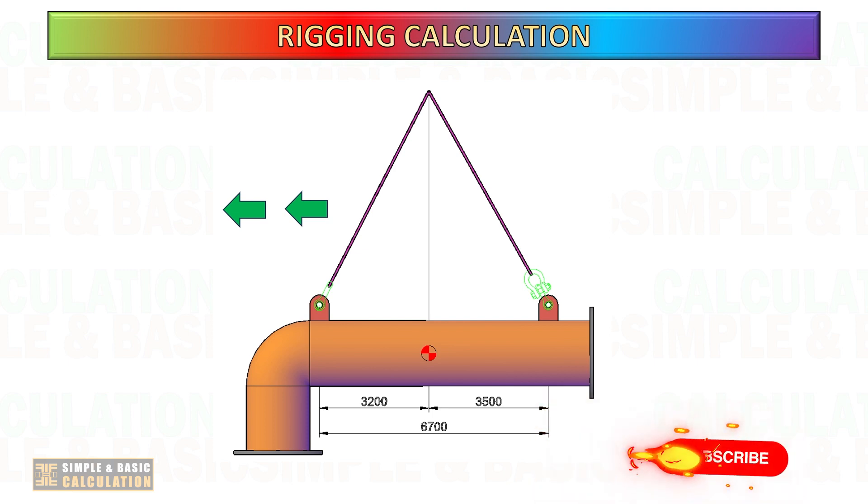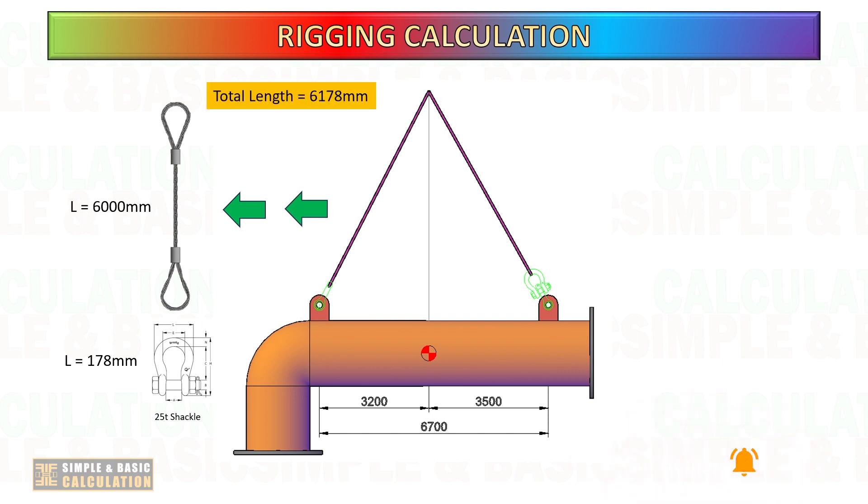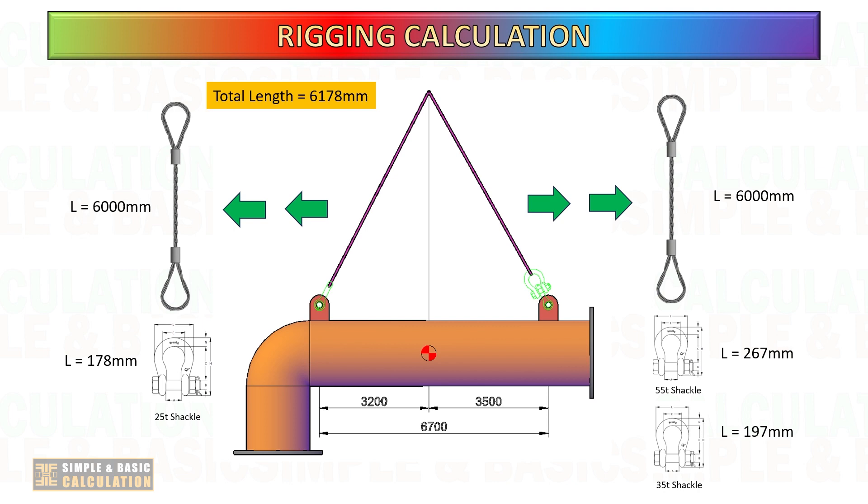Let us do another example. Consider using 25-ton shackle plus 6 meter of wire sling on lifting point number 1, and for lifting point number 2 is one piece of 35-ton shackle and 55-ton shackle plus 6-meter wire sling.